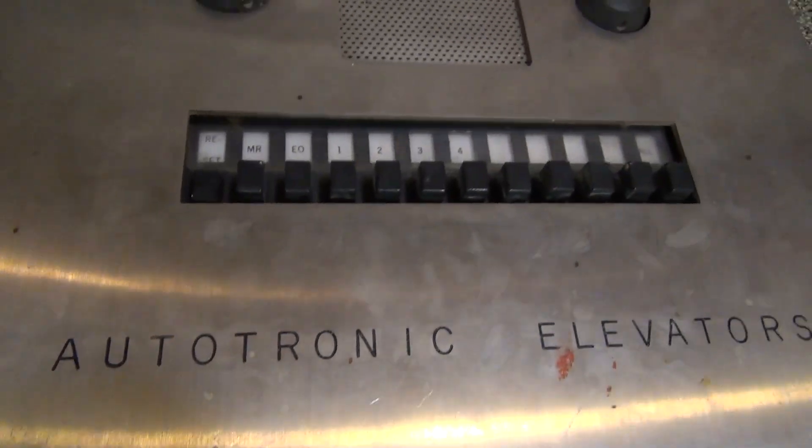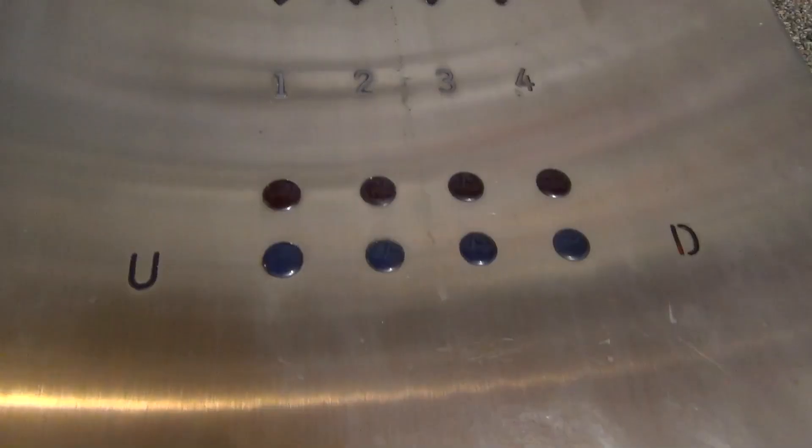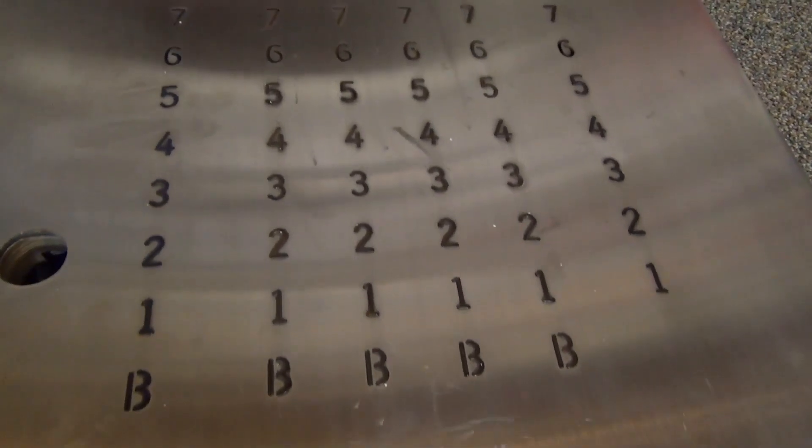Here in the middle section, we have the communication system. I'm not really so sure how all this worked, but it's definitely here. And then the top section has all the lights for the status of all the cars.